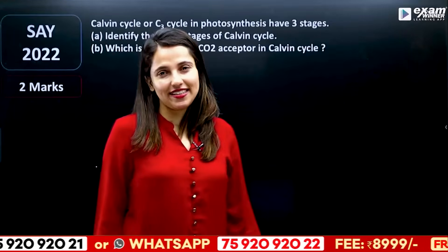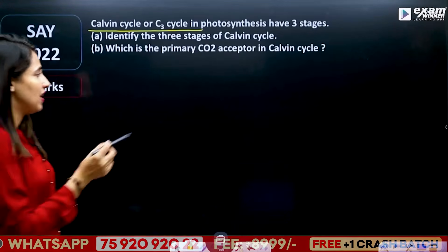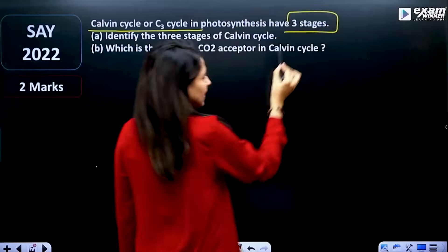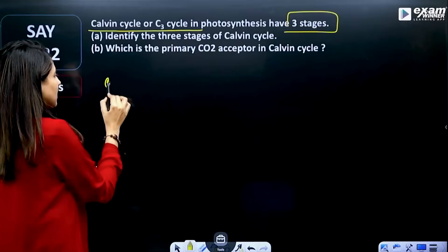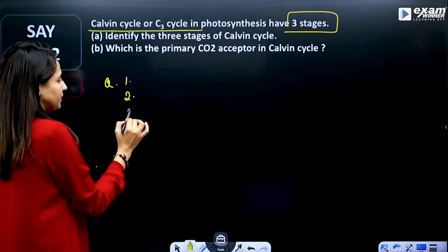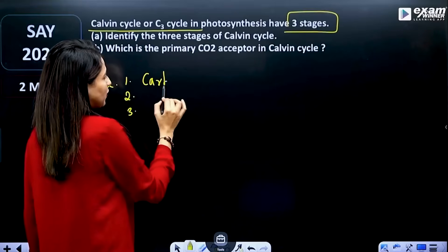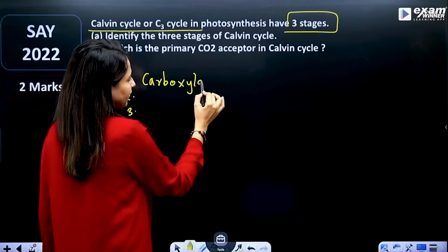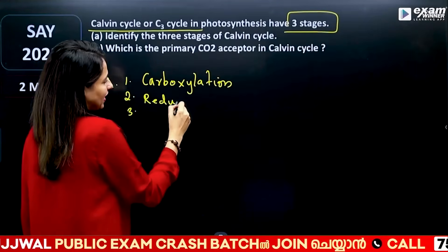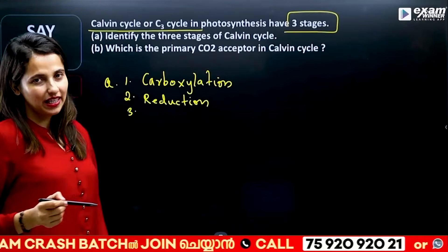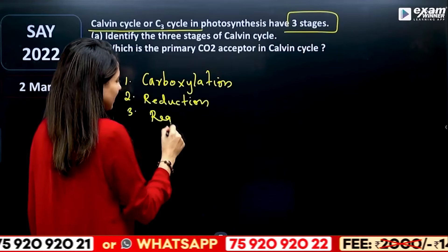In the photosynthesis section, an important question involves the Calvin cycle, also called C3 cycle. The C3 cycle has three stages. Identify the three stages: first is carbon dioxide fixation; second is reduction — carbohydrate/glucose formation; third is RuBP regeneration, i.e., the regeneration step.